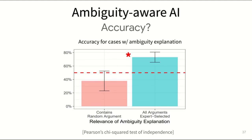We see that experts did pay attention to ambiguity explanations. But the difference in accuracy also highlights the fact that it is important to not only explain ambiguity somehow, but to explain it well — because when ambiguity is pointed out but not explained well, it can harm human judgment and reduce accuracy.